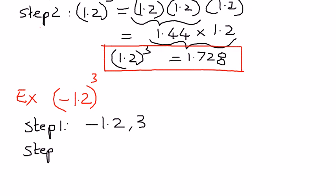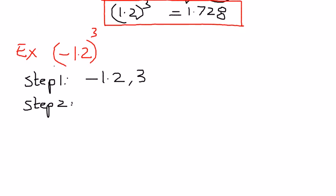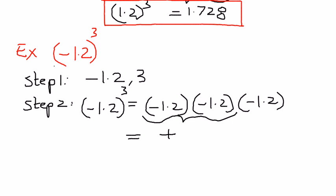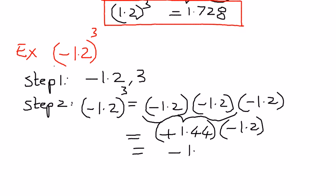In step number 2, we're going to apply the concept. The base term needs to be repeated the number of times indicated by the exponential term. So negative 1.2 raised to the power of 3 expands to negative 1.2 times negative 1.2 times negative 1.2. Taking two numbers at a time: negative times negative is positive, so 1.2 times 1.2 is positive 1.44. Then we multiply that by negative 1.2 — positive times negative is negative — and 1.44 times 1.2 is 1.728.